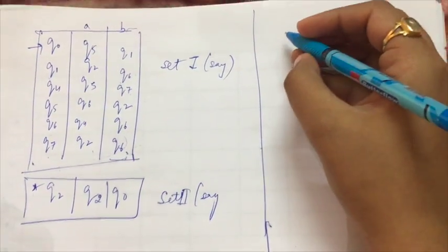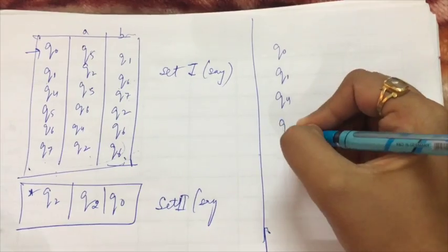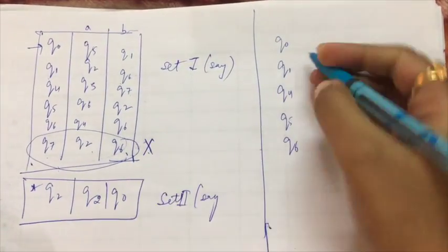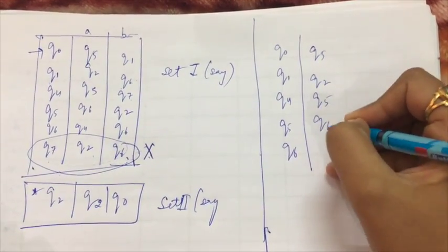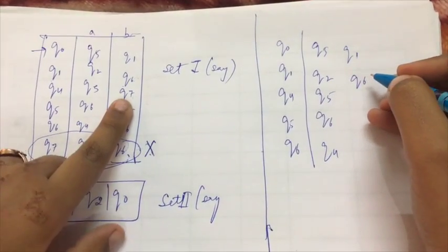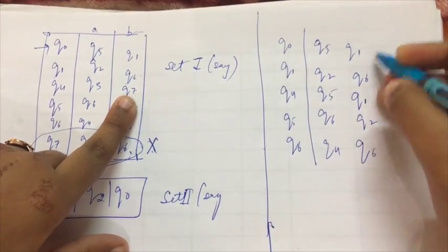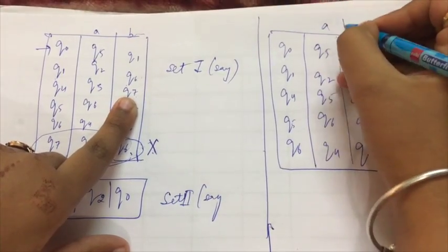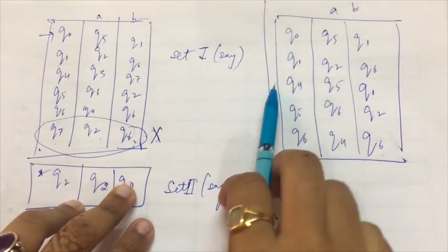So our transition table would become Q0, Q1, Q4, Q5, and Q6. That is, I have removed this state from my table. So that will be taken as Q6 and Q4. Now here where there was Q7, I will write down Q1, and then Q6, Q2, and Q6. Now this is our new table for the non-final state.